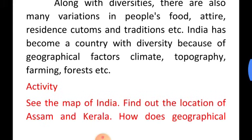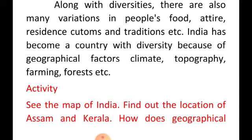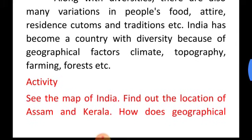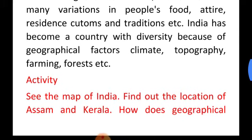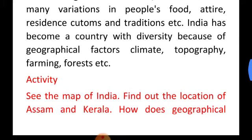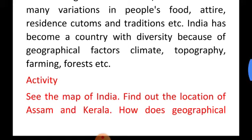Topography means the physical features of any area. For example, forest, hills, mountains, and desert. If we look at the north, we have the Himalayan mountain range. In Rajasthan and Gujarat, we have a desert. In southern India, we have the Deccan plateau.